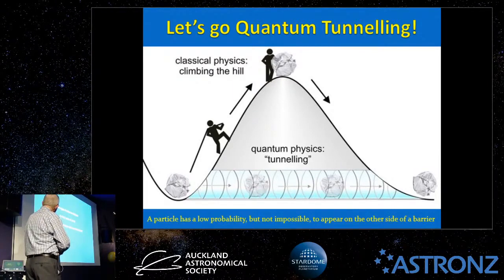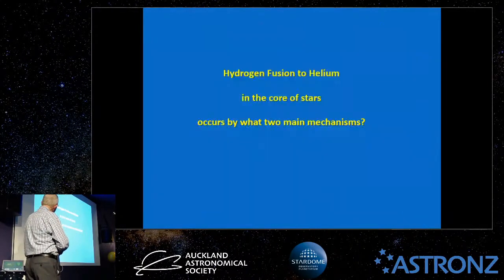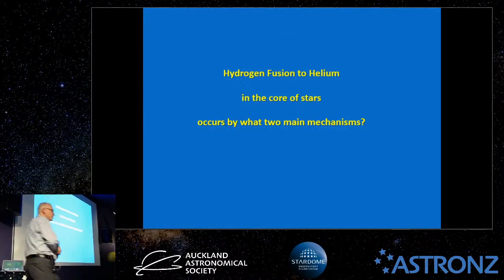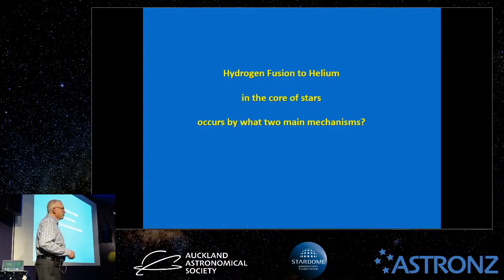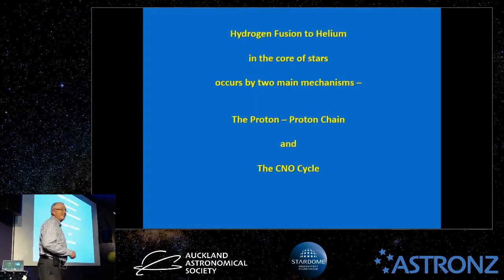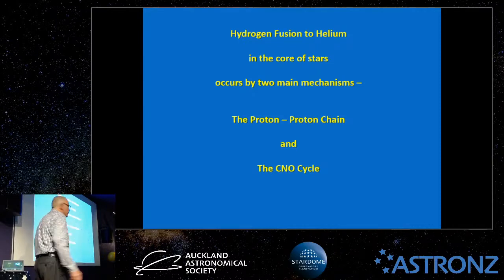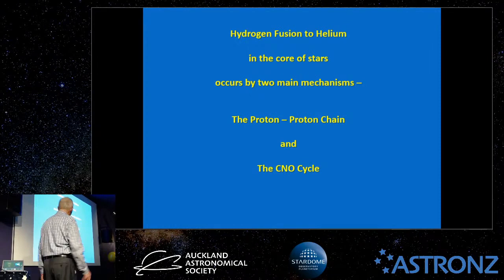Hydrogen fusion to helium in stellar cores occurs via two main mechanisms: the proton-proton chain and the CNO cycle — these are the two methods used to bring protons together to create helium nuclei.